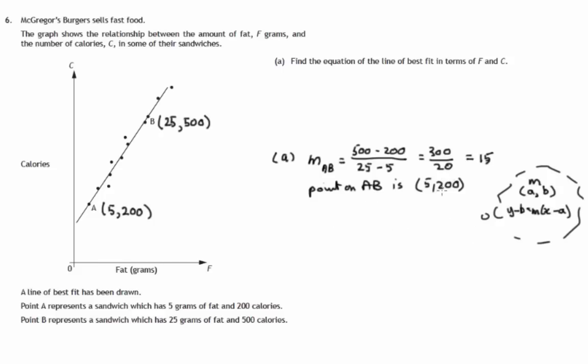So instead of Y minus the Y coordinate, we'll use C minus this C coordinate. So it's C minus 200 equals the gradient M, which is 15, and then the X difference. And so the letter X is now an F minus the X coordinate of the point, which is 5.